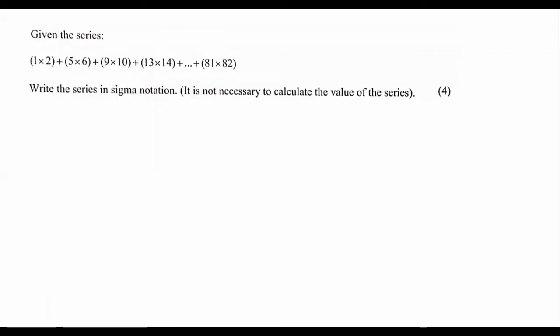Write the series in sigma notation. So if we look at 1 times 2, we know that that is just going to be 2. 5 times 6 is 30. 9 times 10 is 90. 13 times 14, 182. And then it goes on and on and on.